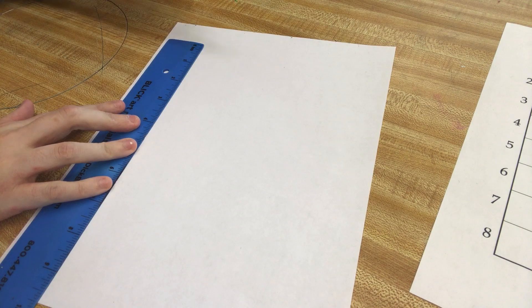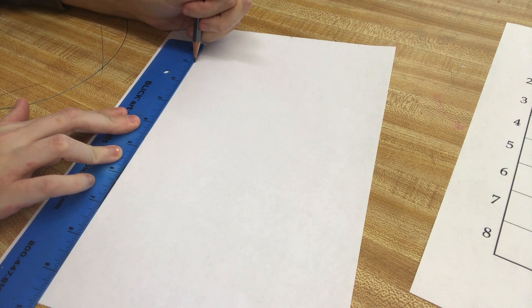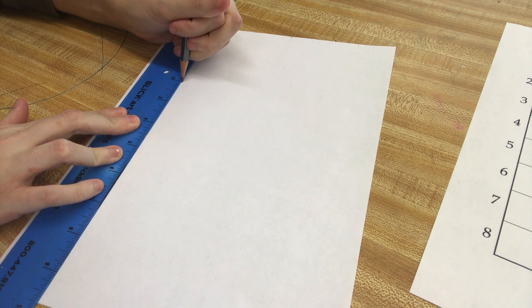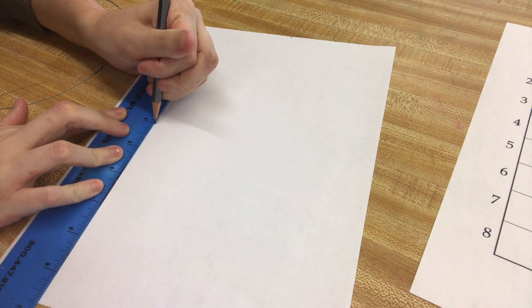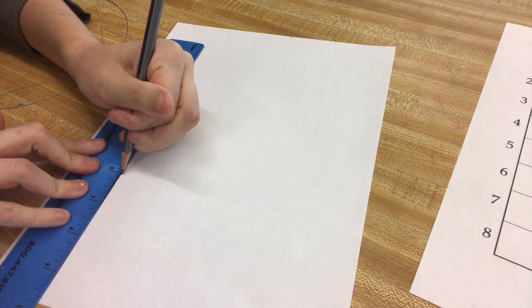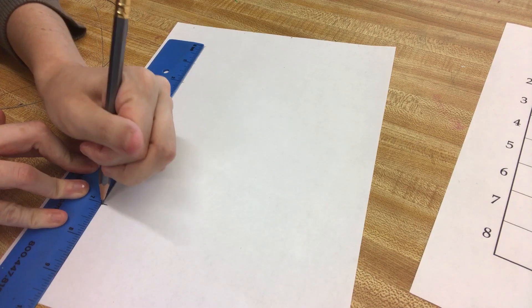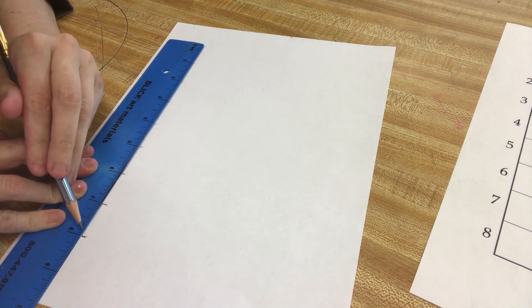I'm going to draw a line from the zero and make little dots on each inch. A little dot for the 2nd inch, 3rd inch, 4th inch, 5th inch, 6th inch, 7th inch, and 8. We're only going down to 8 inches.